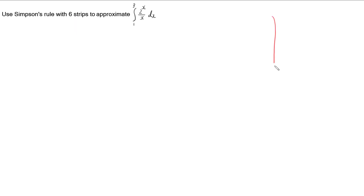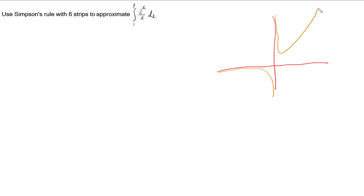Let's have a look at the graph of 2 to the x on x. In the negative x direction, it asymptotes onto the negative side. In the positive x direction, it comes from an asymptote near the y-axis, comes down and then heads off that way. We want to know what is the area underneath this curve between x equals 1 and x equals 3 — so we want to know what this shaded area is.